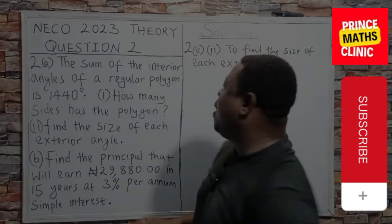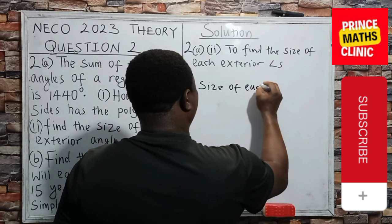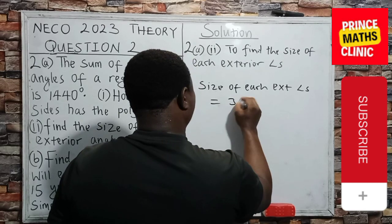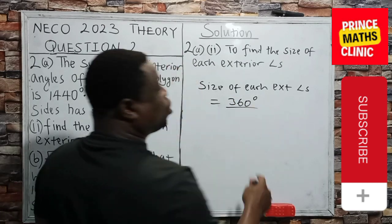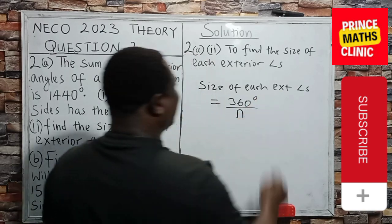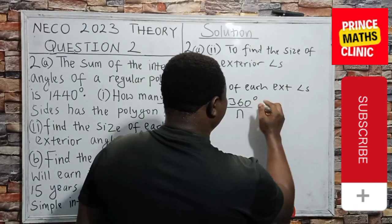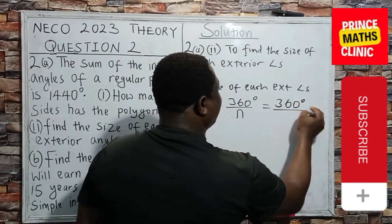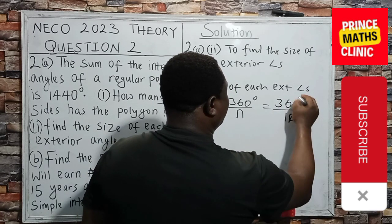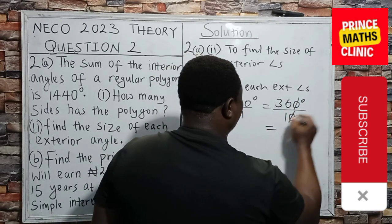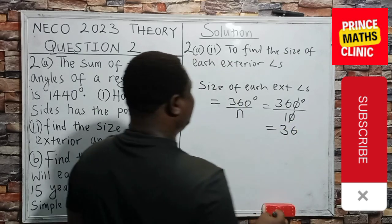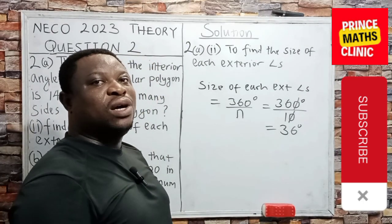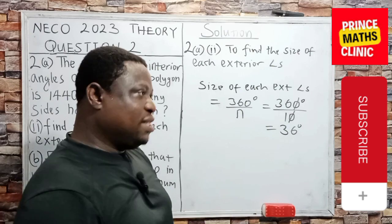Then I will use this formula. Size of each exterior angle is equal to 360 degrees, because that is the sum of all the angles, divided by the number of sides that it has. Since we know that the number of sides is 10, so just say 360 degrees divided by 10. 0 cancels 0. Therefore, you are going to have 36 degrees. It means that each of the exterior angles is 36 degrees.